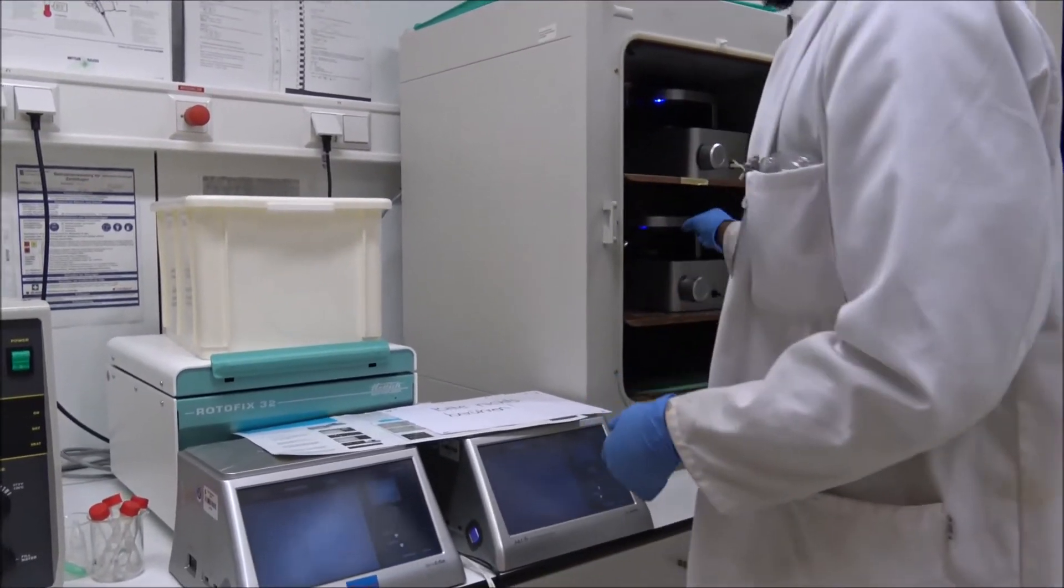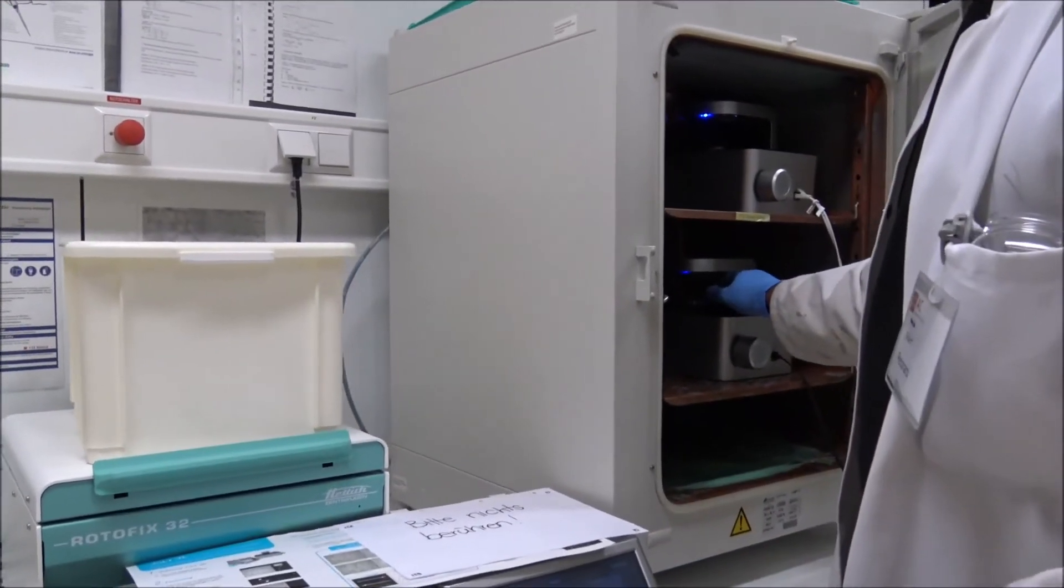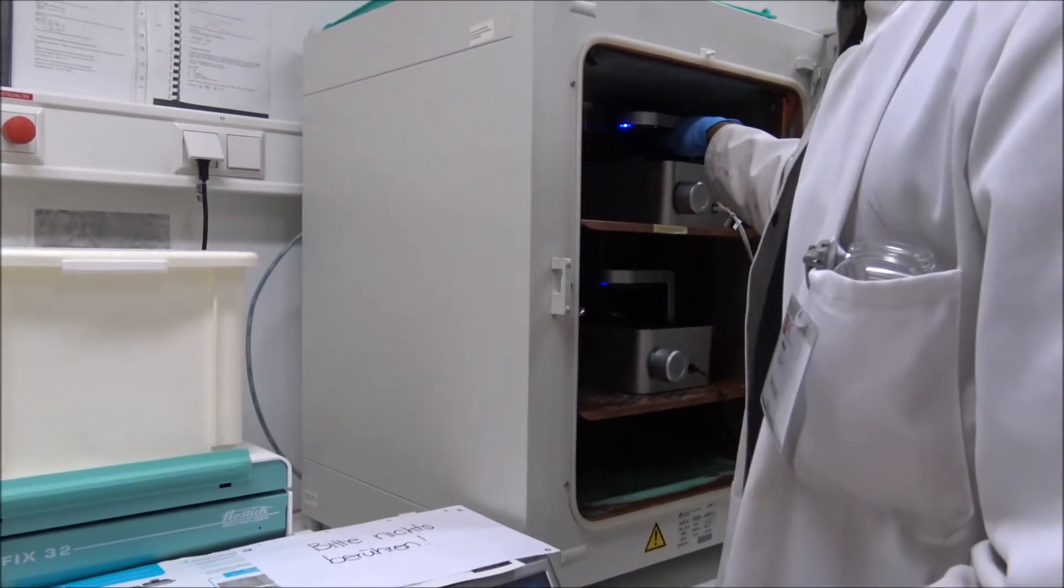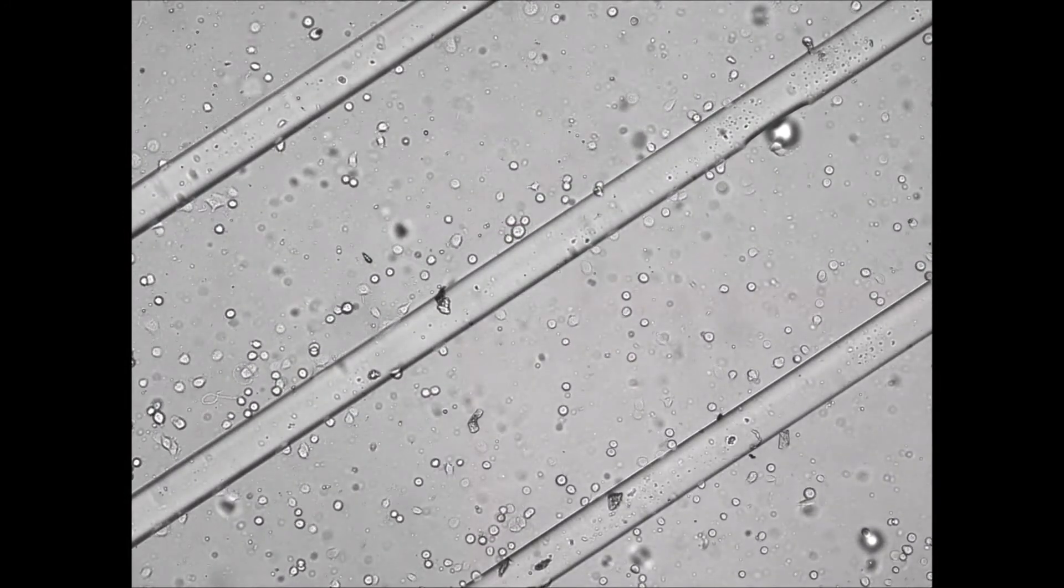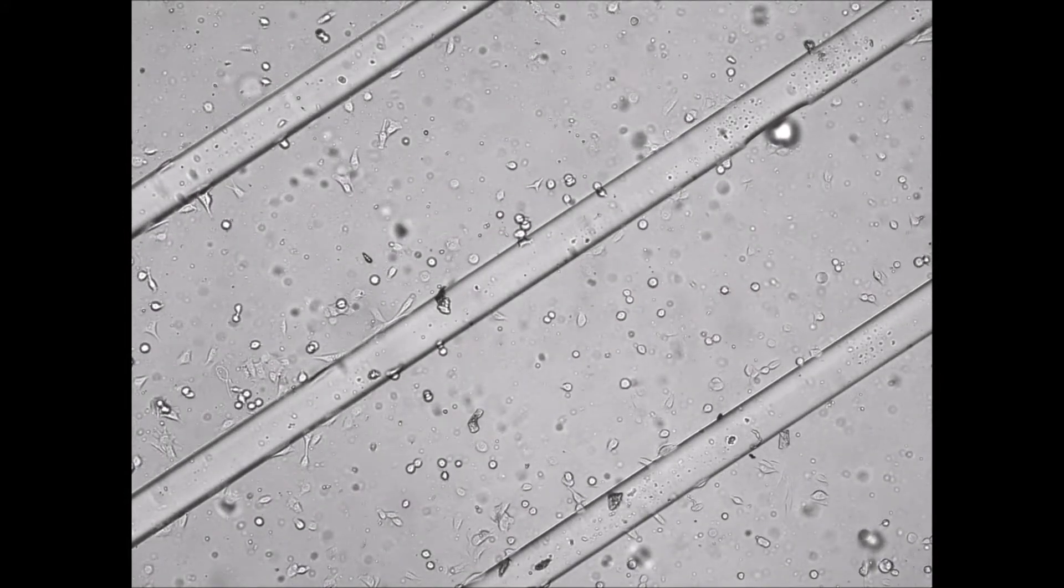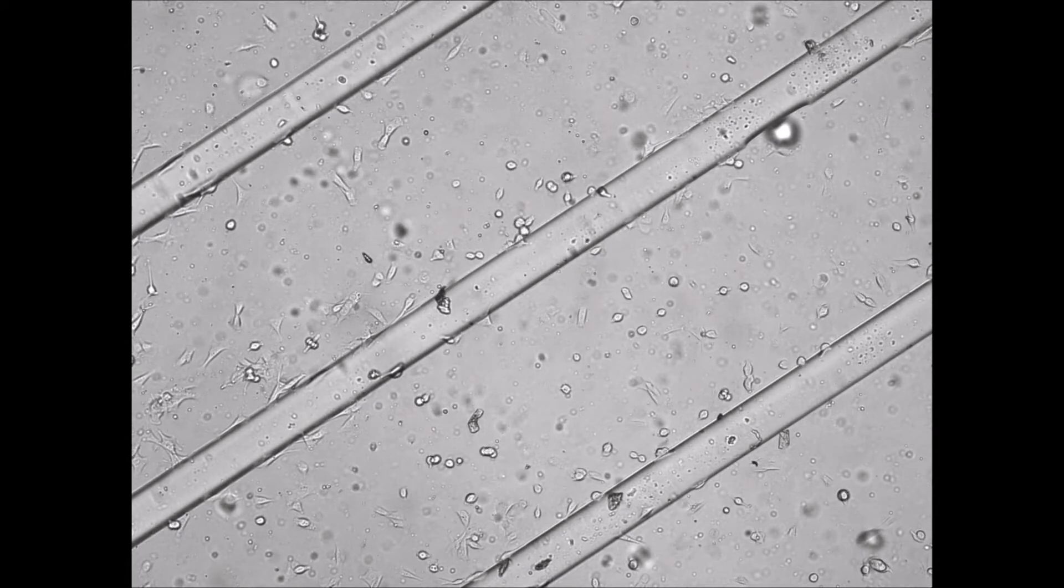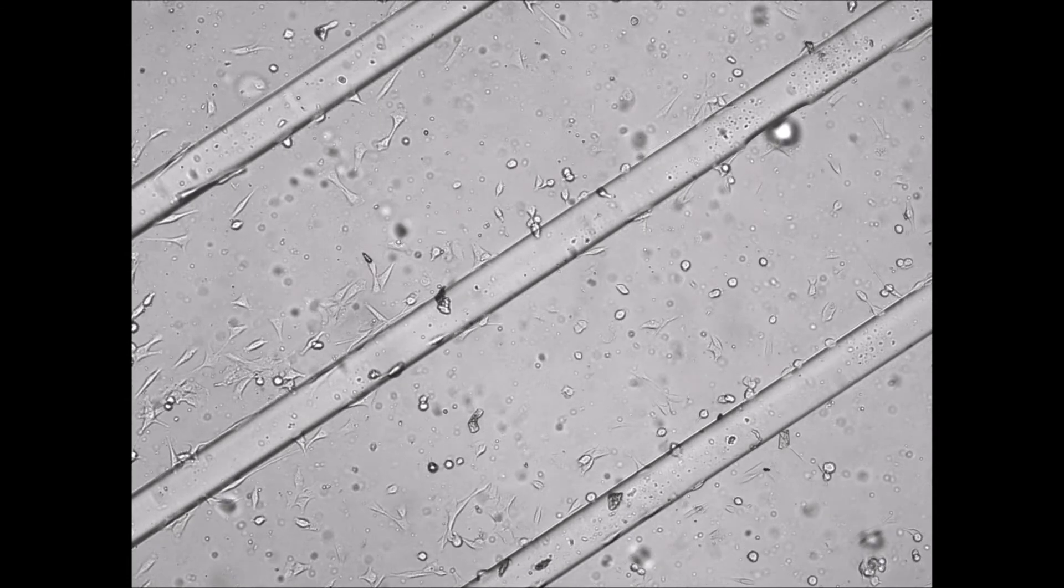C2C12 cells are a cell line of myoblasts which are also called satellite cells. They can be found in rare numbers in adult skeletal muscle tissue where they proliferate and differentiate into myotubes after small injuries.